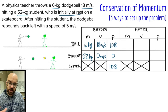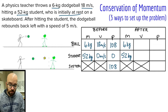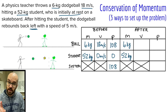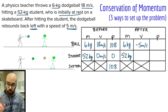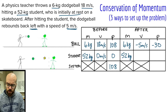The masses of both objects stay the same, so I can go ahead and fill in the mass column. Reading the rest of the problem: after hitting the student, the dodgeball rebounds back to the left — that's the negative direction, really important here — with a speed of five meters per second. So the velocity of the ball afterward is negative five meters per second. We don't know the student's velocity yet, but we can calculate the momentum of the ball afterward: negative five times six gives us negative 30.